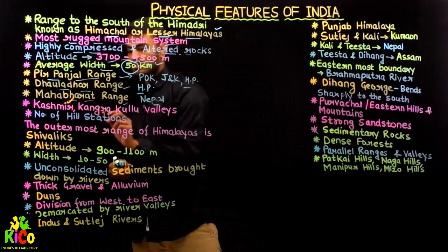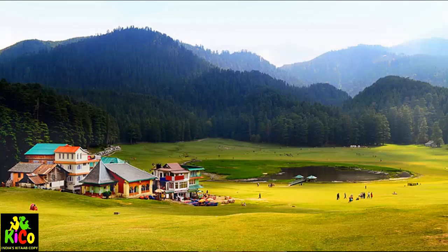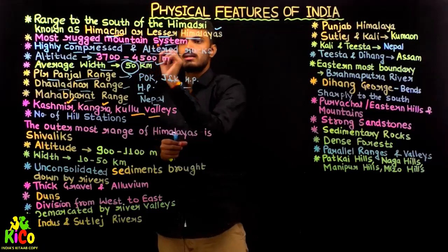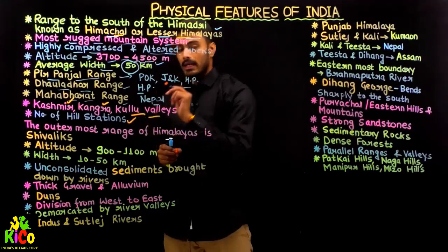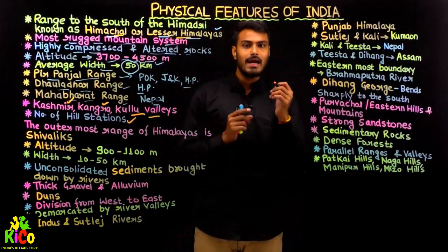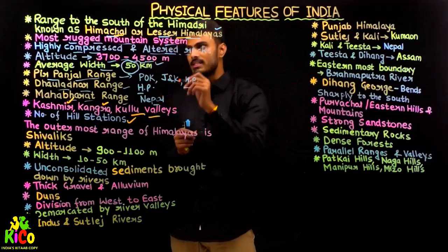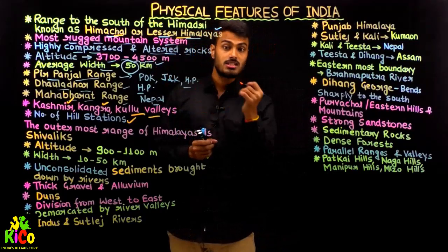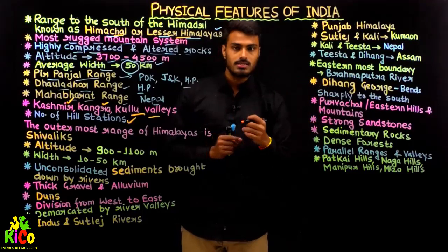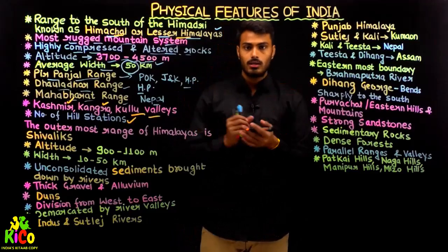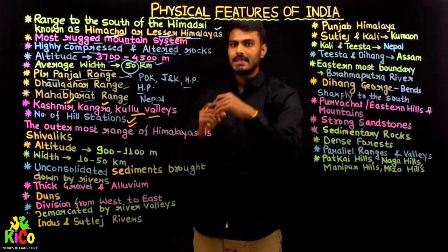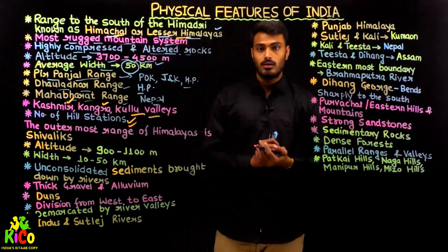The Kashmir Valley lies in Jammu and Kashmir Union Territory, while Kangra Valley, Kullu Valley, and Manali Valley are all found in Himachal Pradesh. All these valleys lie in the Himachal range, or Lesser Himalayas. As already discussed, most of the hill stations that India has in the Himalayan mountain ranges are found in this Lesser Himalayas range.